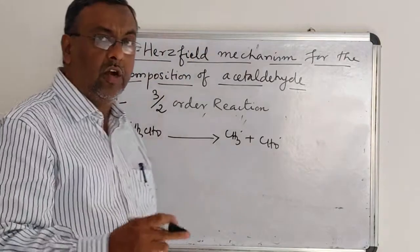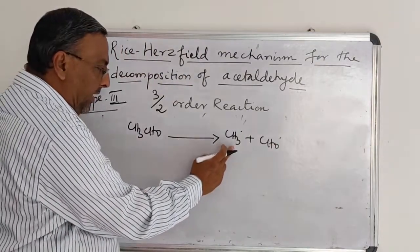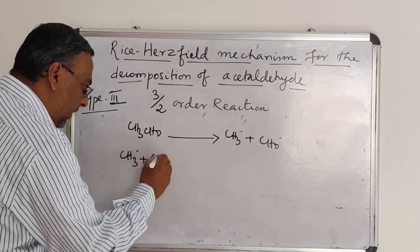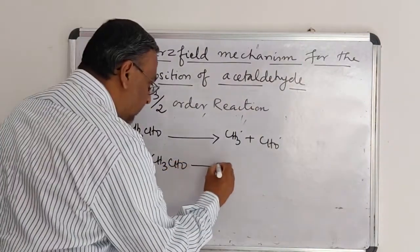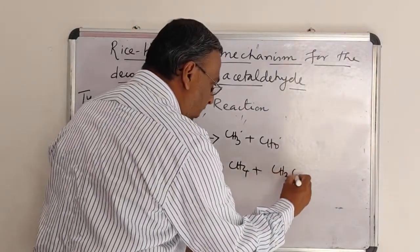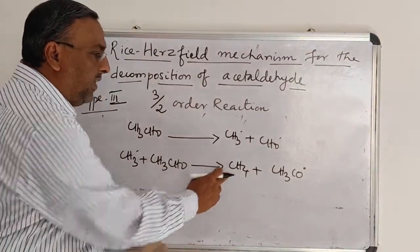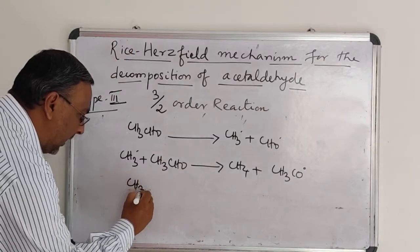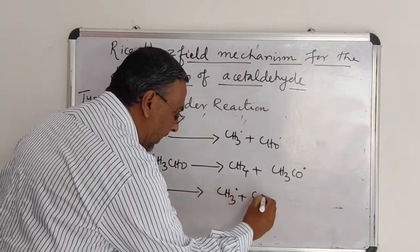The acyl radical is not the reactive intermediate because it decomposes to give carbon monoxide, whereas the reactive intermediate — the active radical — is the methyl radical. Therefore, in the propagation step, it converts all the acetaldehyde into product, that is methane, and again an acyl radical is formed. The major product is methane. Then this acyl radical decomposes to give again a methyl radical and carbon monoxide.